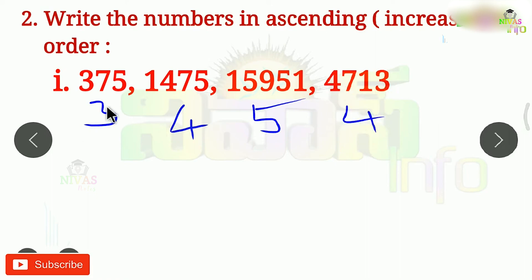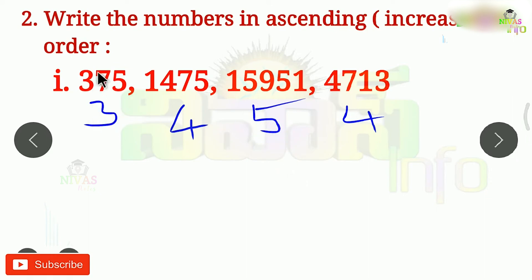There are 3-digit numbers, 4-digit numbers, and 5-digit numbers. So, what is the smallest number? The 3-digit number.